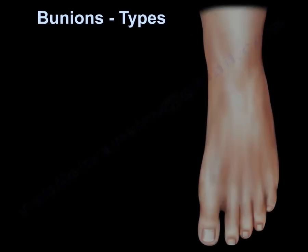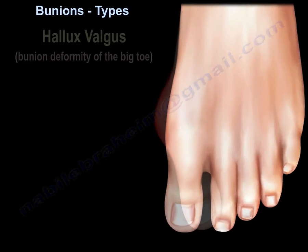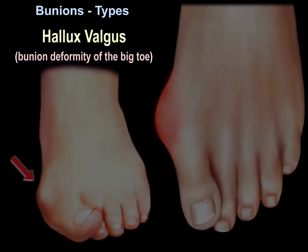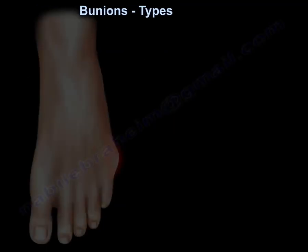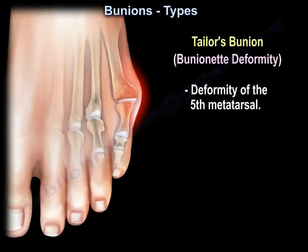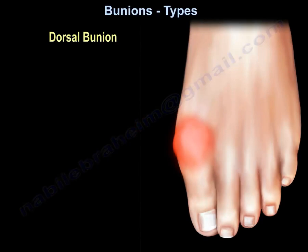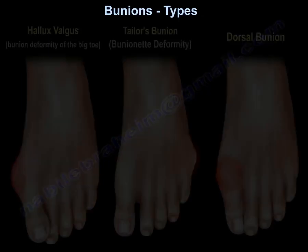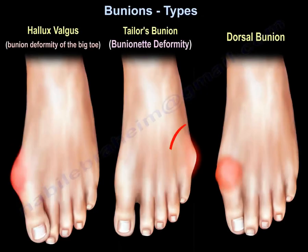Bunions types. Bunions can be hallux valgus, which is bunions of the big toe. There's another type of bunion called Taylor's bunion, or deformity of the fifth metatarsal. Taylor's bunion is also called bunionette deformity. You may also have an entity called dorsal bunions. So bunions can be hallux valgus, Taylor's bunion, or dorsal bunion.